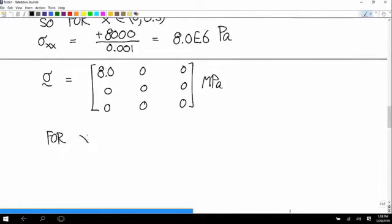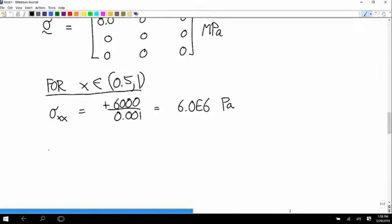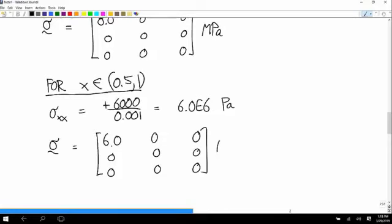And on the other half, for x in the range from 0.5 to 1, the xx stress is positive 6,000 divided by 0.001. And that's 6.0 times 10 to the 6th Pascal. And so the stress tensor on that half, for any point on that half, is 6.0, 0 is everywhere else in megapascals.